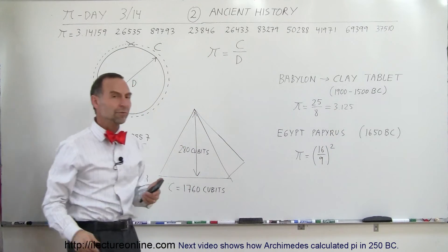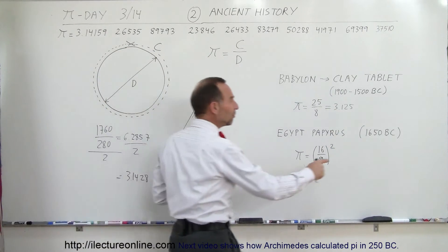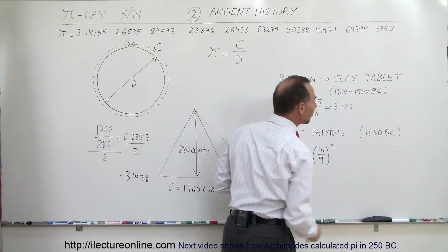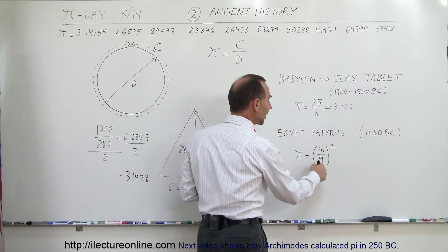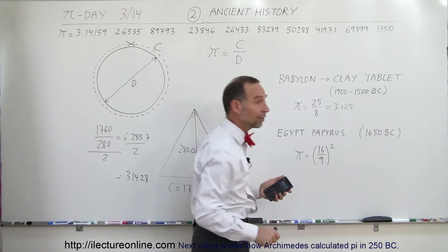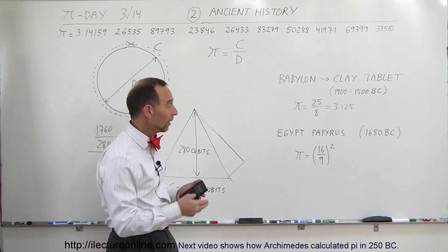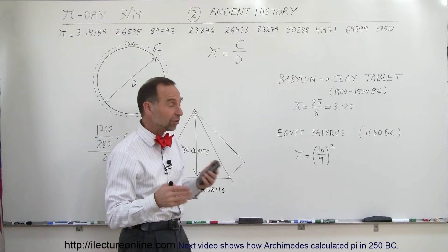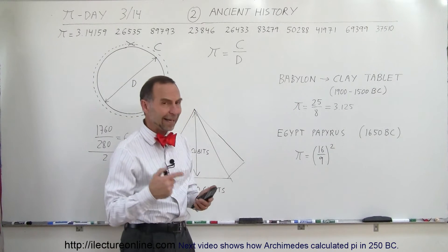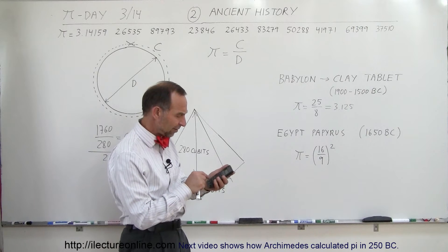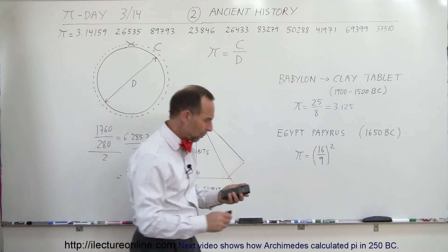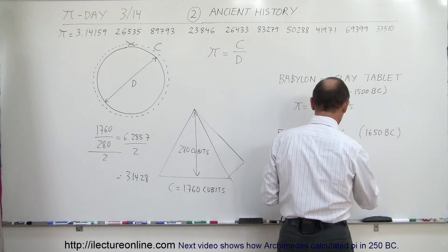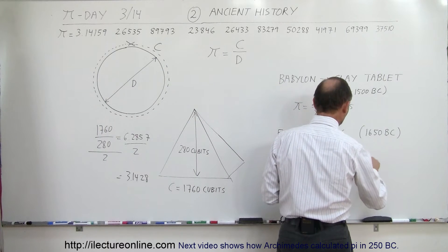In Egypt, we found a papyrus that dates back to 1650 BC, so more than 3,500 years old. There they used the ratio 16 divided by 9 quantity squared. 16 is 4 squared, 9 is 3 squared, so they squared that ratio. Let's take 16 divided by 9 and square that, and we get 3.160.